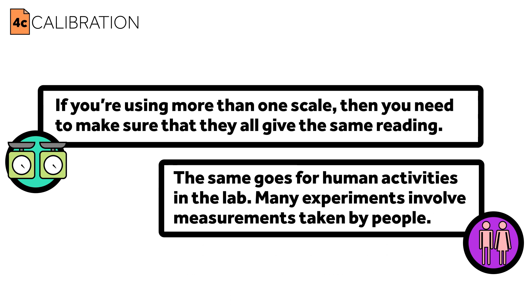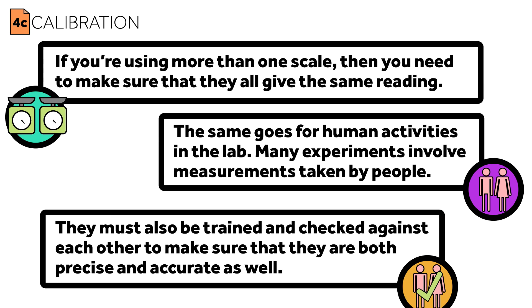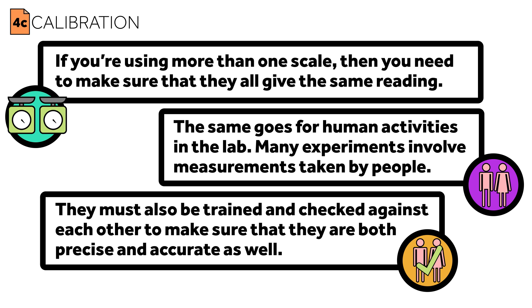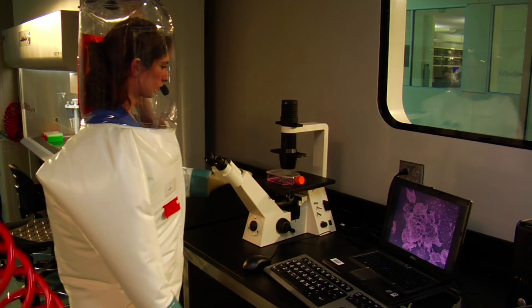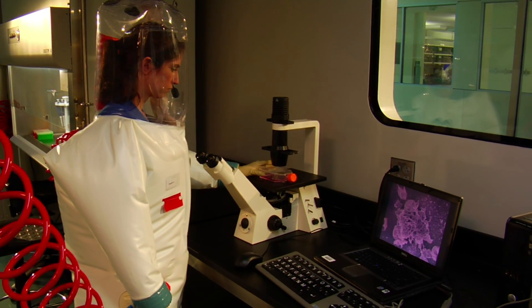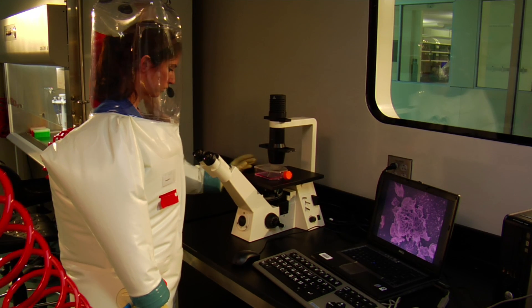The same goes for human activities in the lab. Many experiments involve measurements taken by people. They must all be trained and checked against each other to make sure that they are both precise and accurate. If you hire a new graduate student in the lab, measurements not only depend on the physical equipment they use, but also the way in which they employ it.